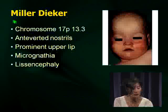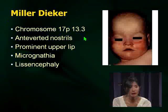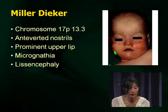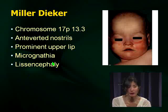Sometimes examiners like to pick on common chromosomal abnormalities. There are associated findings: anteverted nostrils, prominent upper lip, micrognathia. But lissencephaly is the clearly associated finding. These kids have significant developmental delay and difficult-to-control seizures. So it's Miller-Dieker.